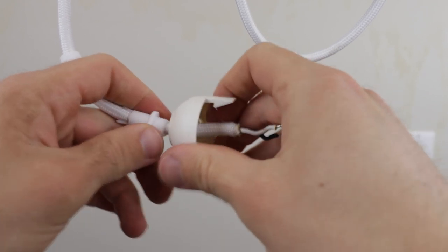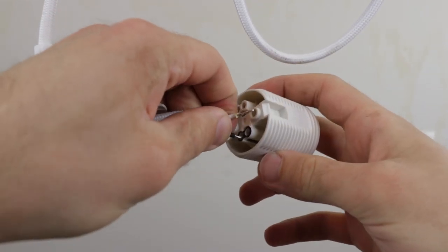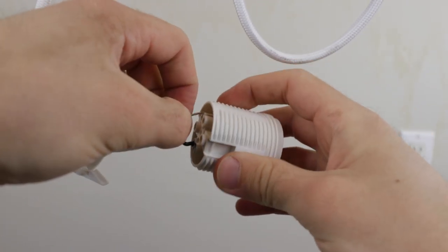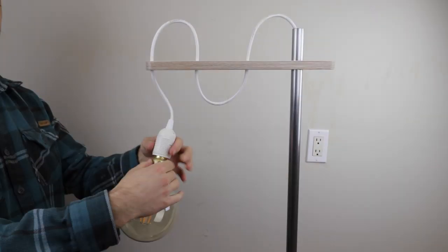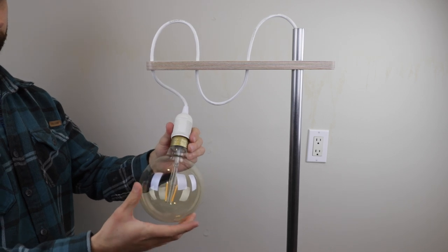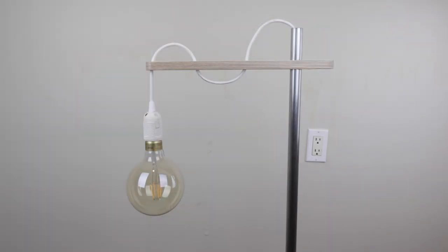With everything threaded, I could reinstall the socket on the end of the cord. I finished off by installing an oversized bulb from IKEA. And the lamp was done.